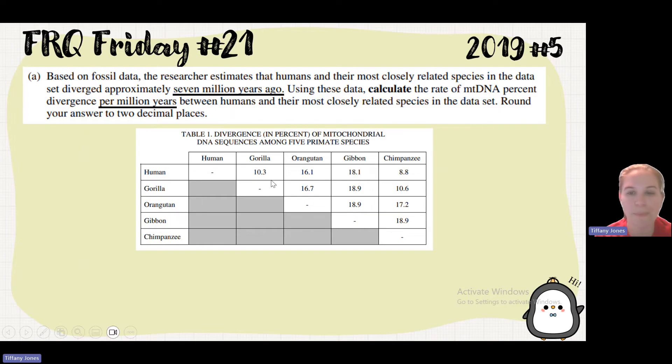If we look here, we can see that the human has the lowest number with the chimpanzee. So it tells us that the human and the chimpanzee are the most closely related individuals. And so if we wanted to calculate this, we say, well, 8.8 divided by 7, because it told us per millions of years.